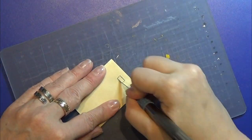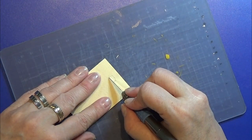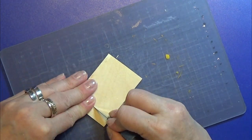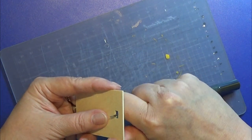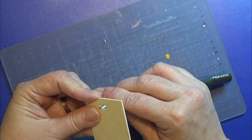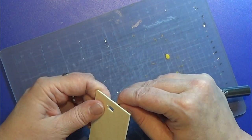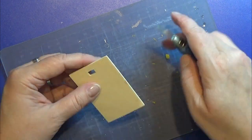I used my X-Acto blade to cut out this little hole. It took quite a while but I kept working on it and eventually got the hole made. I sanded it and made sure it had the right size for my little switch.